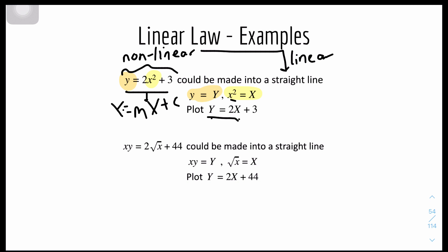Another example is that we have this non-linear because it's a degree of more or less than 1. This non-linear can be made into a linear equation by substituting xy as big Y and root x as big X. So to rewrite it, you can substitute xy like this and it will become big Y equals 2 big X plus 44, and that's a linear equation.